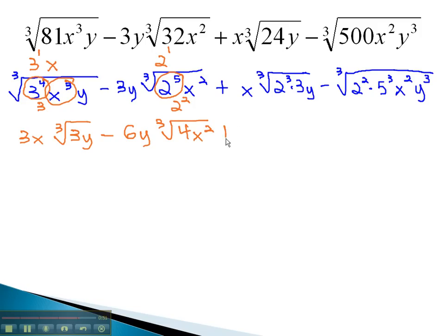Plus 2 cubed, dividing the exponent by 3 gives us 2 to the 1st, giving us 2x times the cube root of 3y, minus 5 cubed pulls a 5 out, y cubed pulls a y out. We have 5y times the cube root of 2 squared, or 4x squared.